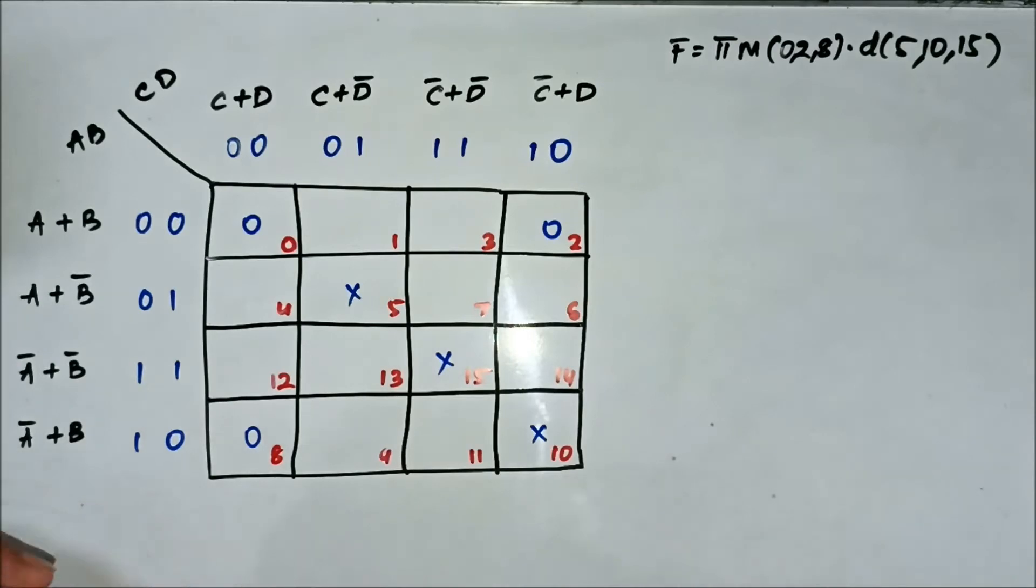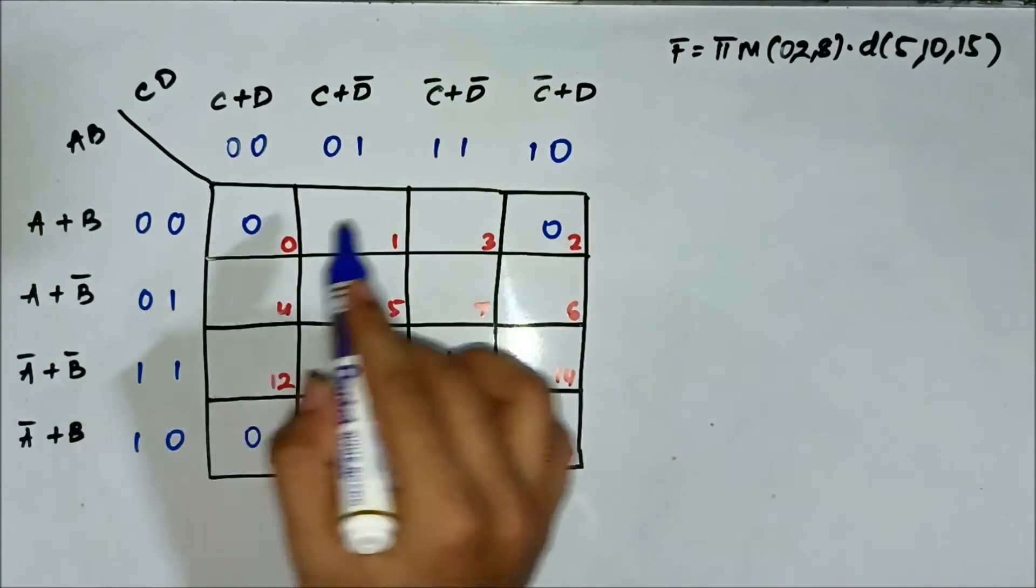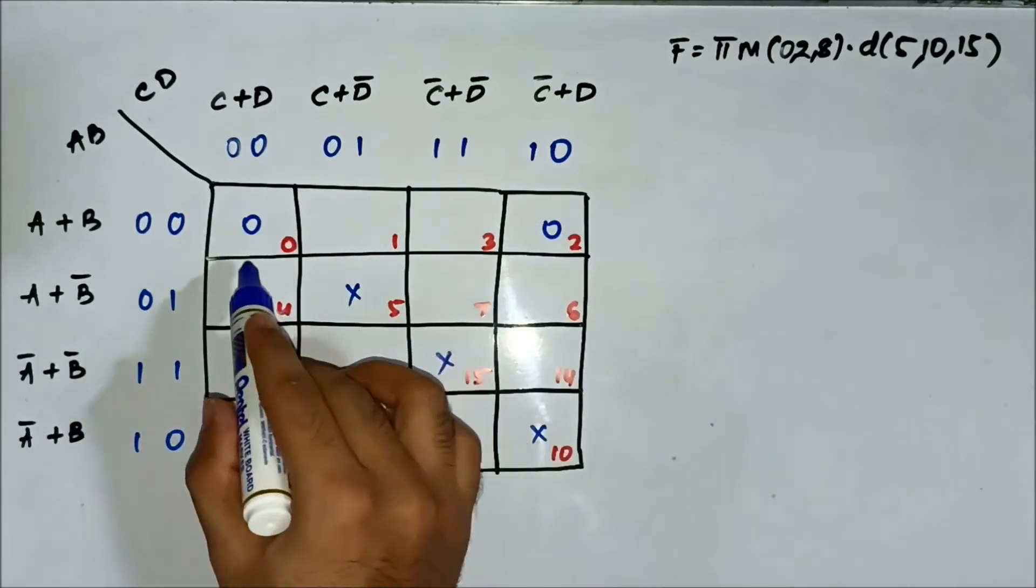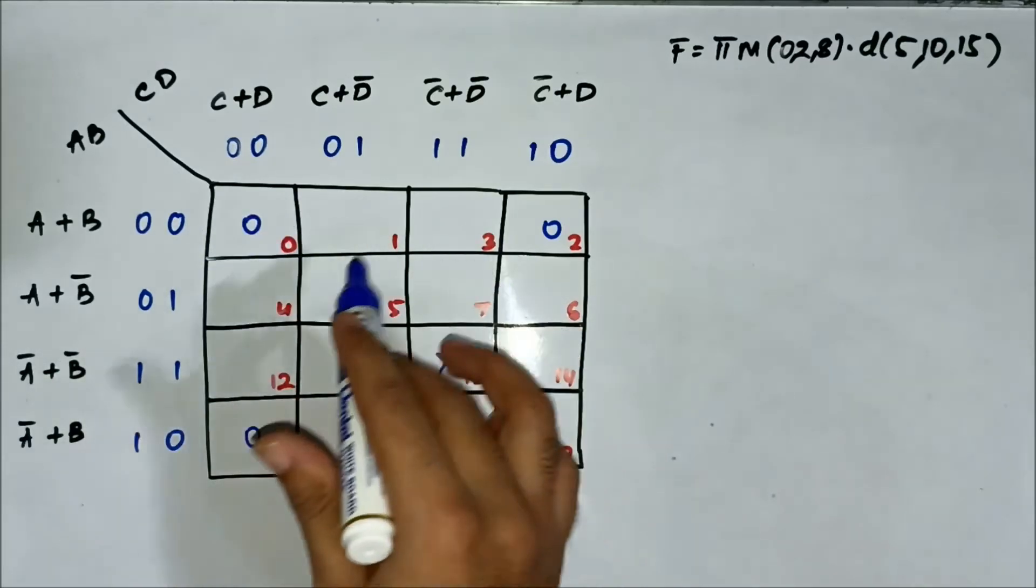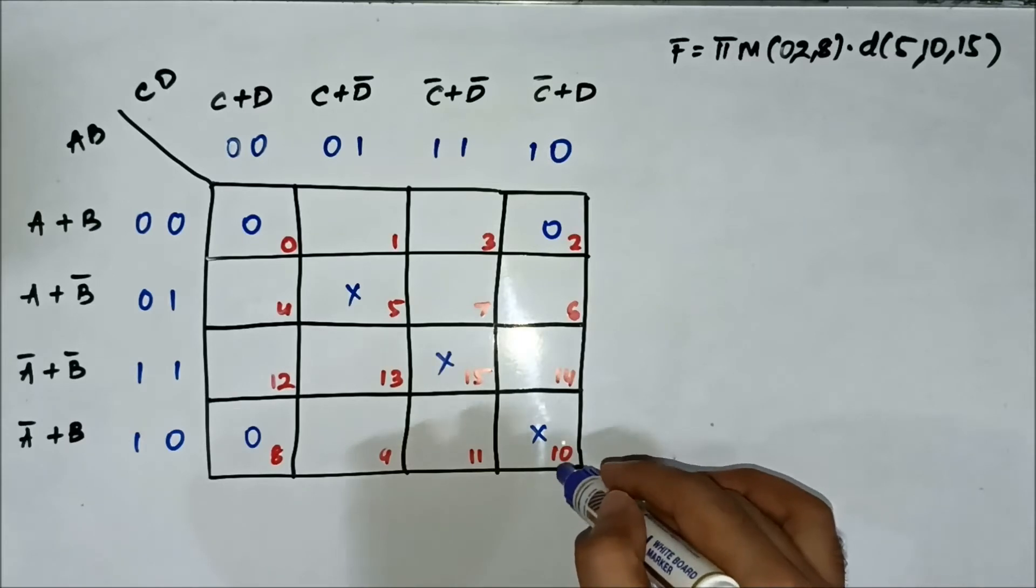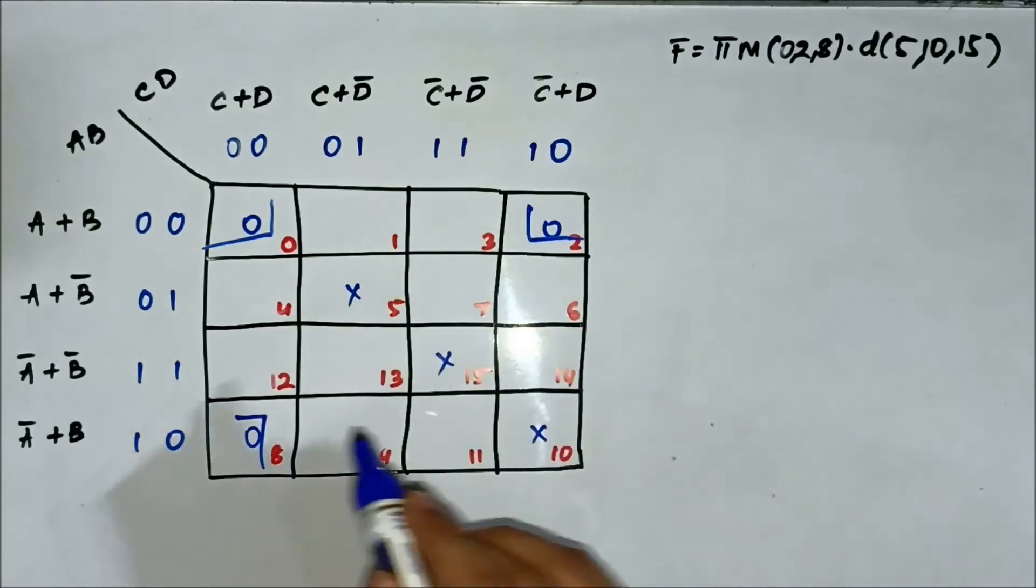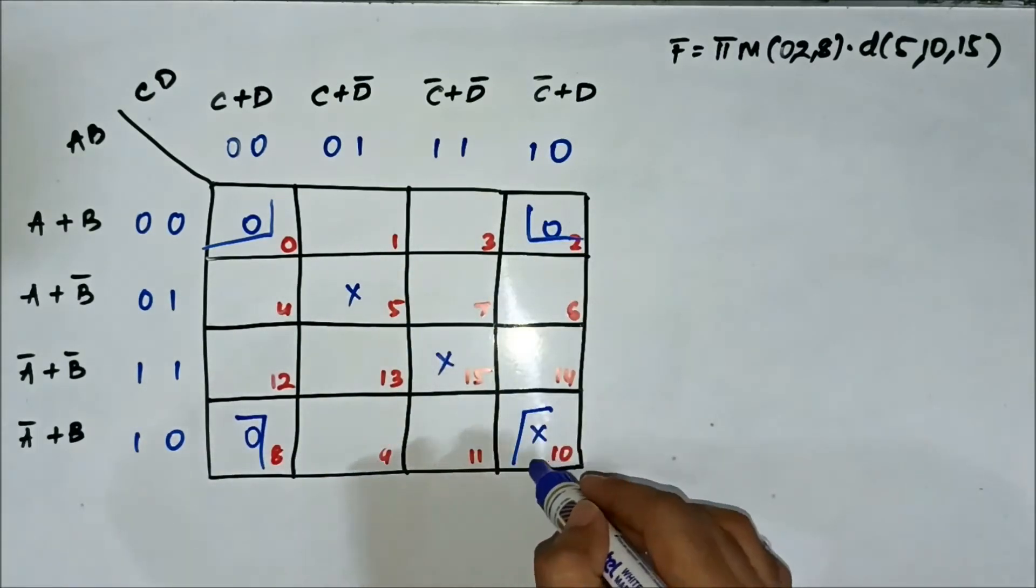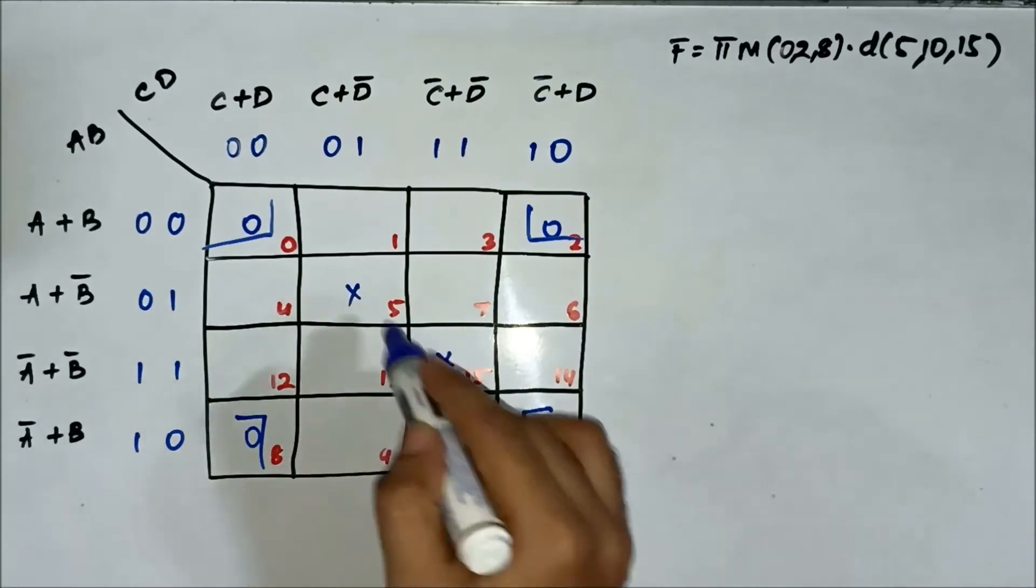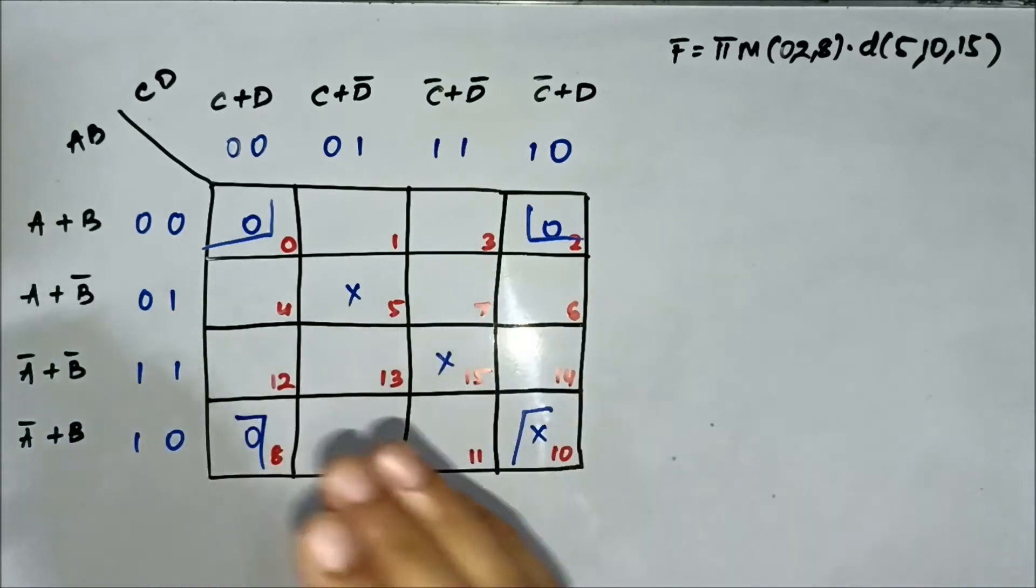Here we will form the groups. These corner cells 0, 2, 8 and 10. 0, 2 and 8 are marked as 0 and X is the don't care cell which is cell number 10. We will form a quad using these three zero marked cells and this don't care cell. These two don't care cells that is cells number 5 and 15 we will leave. We will not accommodate them in any groups because it is not necessary.